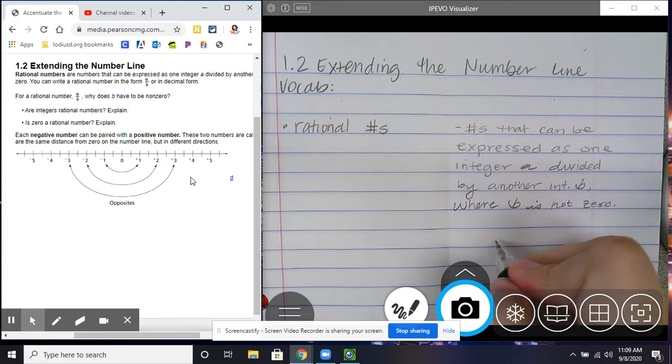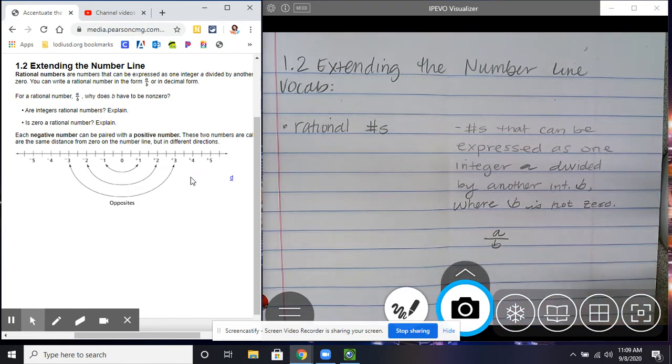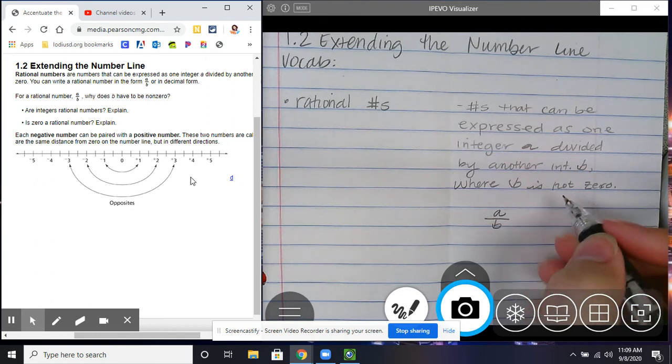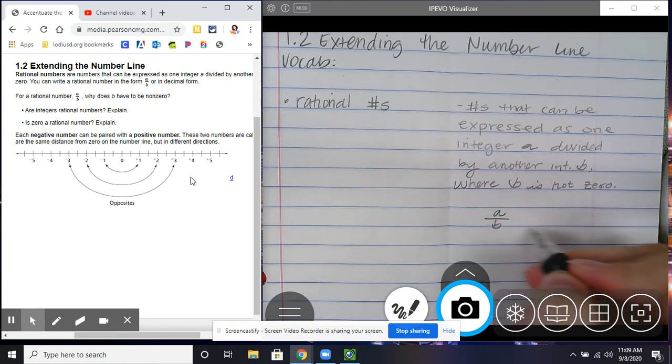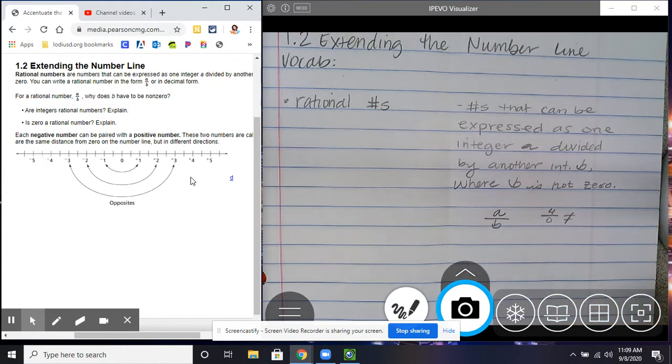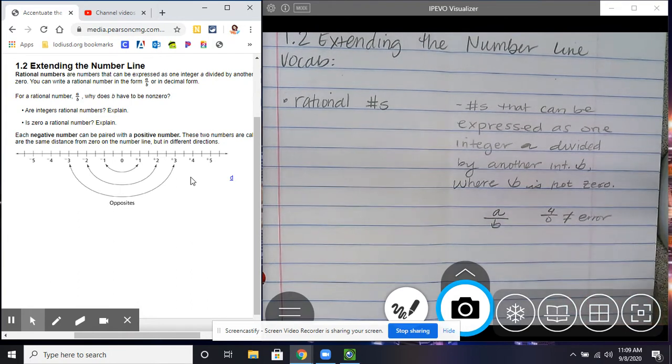So basically it would look like this. A fraction. So b has to be a non-zero because any number divided by 0 has no answer. If you put it on a calculator, it would say error. You can't do that.